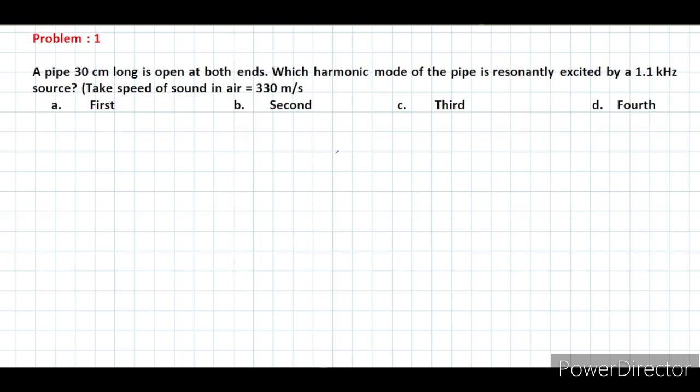In today's lecture, we will discuss some problems in Resonance Pipes. The first problem is: a pipe 30 cm long is open at both ends. Which harmonic mode of the pipe is resonantly excited by a 1.1 kHz source? Take the speed of sound in air as 330 meters per second.